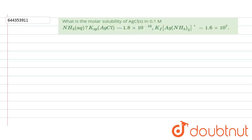What is the molar solubility of AgCl in 0.1 molar NH3? Ksp value of AgCl is 1.8 × 10^-10 and Kf value of Ag(NH3)2+ is 1.6 × 10^7. These two values are given to us.